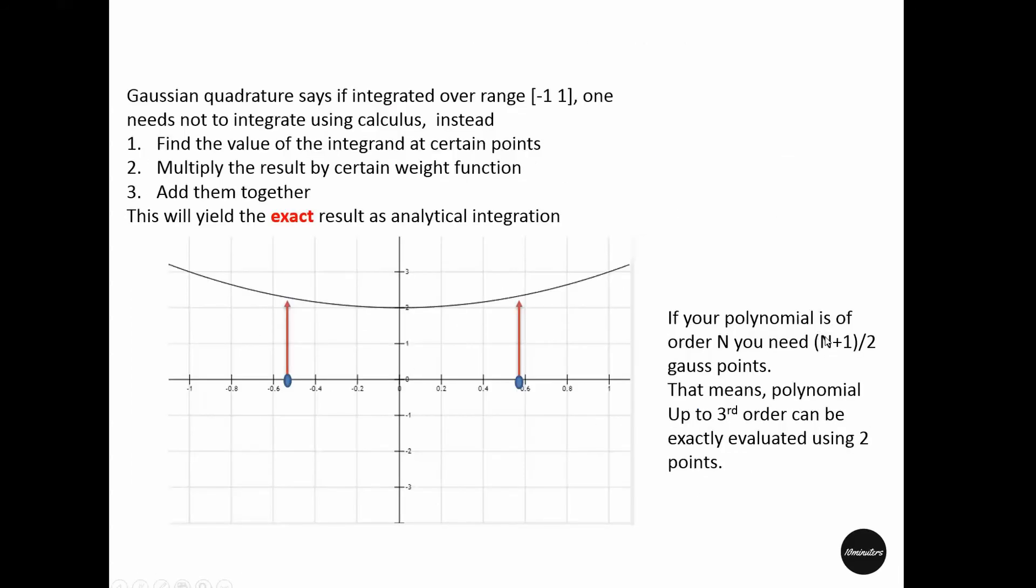If you have a fifth order polynomial, then 5 plus 1, 6 divided by 2, that means 3. So you will need 3 Gauss points to successfully integrate your function. But if your highest power of the polynomial is, for example, 8, then 8 plus 1 is 9 divided by 2, 4.5. You have to take the next full number, which is 5. So that means with a polynomial with highest power of 8, you will need 5 Gauss points to integrate that particular polynomial function.